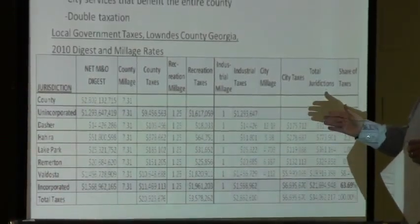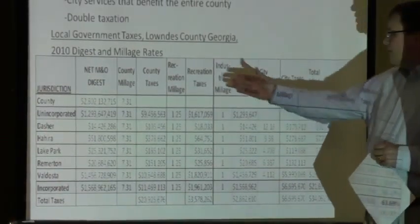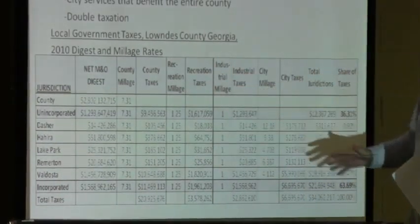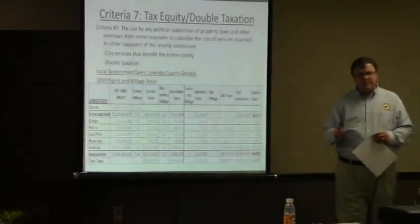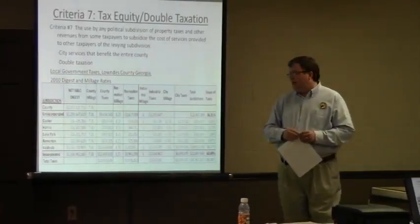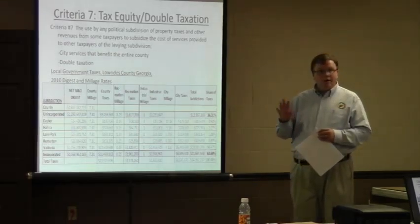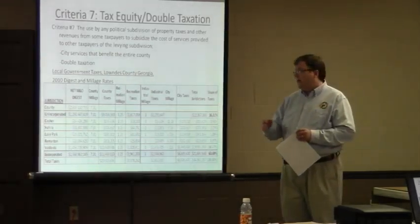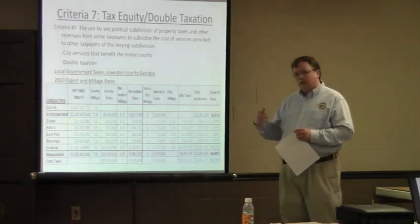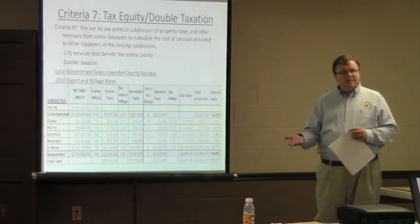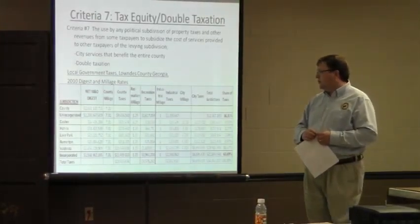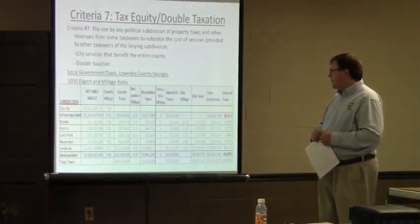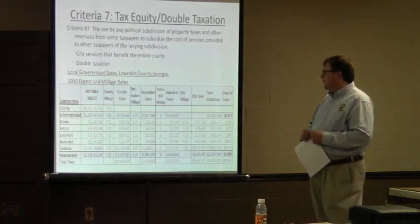Looking at the parks and recreation mills, you can see countywide that is a mill and a quarter that is levied against all of the citizens of the county and the city, and is billed independently. That money is collected by the tax collector and distributed directly to the authorities — the other governments are not involved.